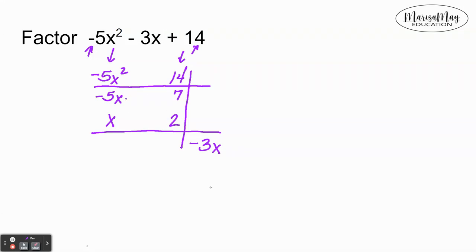Now let's check it and the way we check it is we multiply across. So negative 5x times 2 gives me negative 10x, and then we multiply across here so x times 7 gives me 7x. And what has to happen in this last column is these two have to add to give you the bottom one. So 7x plus negative 10x gives you negative 3x, that works.